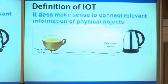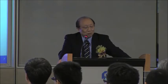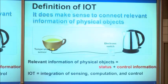What do you really want to connect? If I put a sensor in your cup to sense the temperature, and send a signal to an electronic switch which controls whether I should heat water or not, this started making sense. So although from a wiring point of view the wires go to the cup, actually the wire goes to the sensor. And although the wire goes to the teapot, it actually goes to the teapot switch. So what we really want to connect is the relevant information of physical objects.